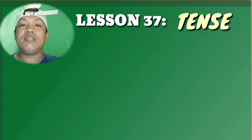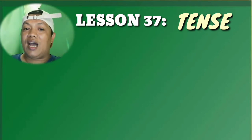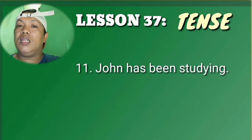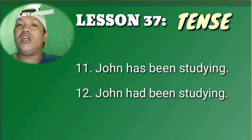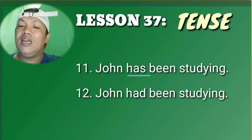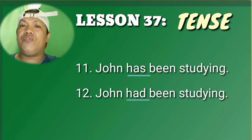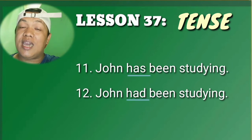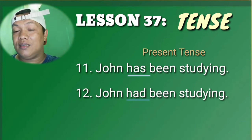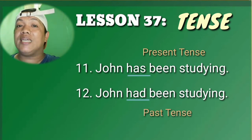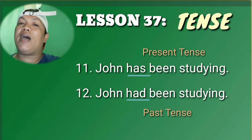Now let's move to sentences eleven and twelve. Sentence eleven: 'John has been studying.' Sentence twelve: 'John had been studying.' The underlined word in sentence eleven is 'has,' and the underlined word in sentence twelve is 'had.' The word 'has' is in the present tense, while 'had' is the past tense of 'has.' Present tense: 'has.' Past tense: 'had.'